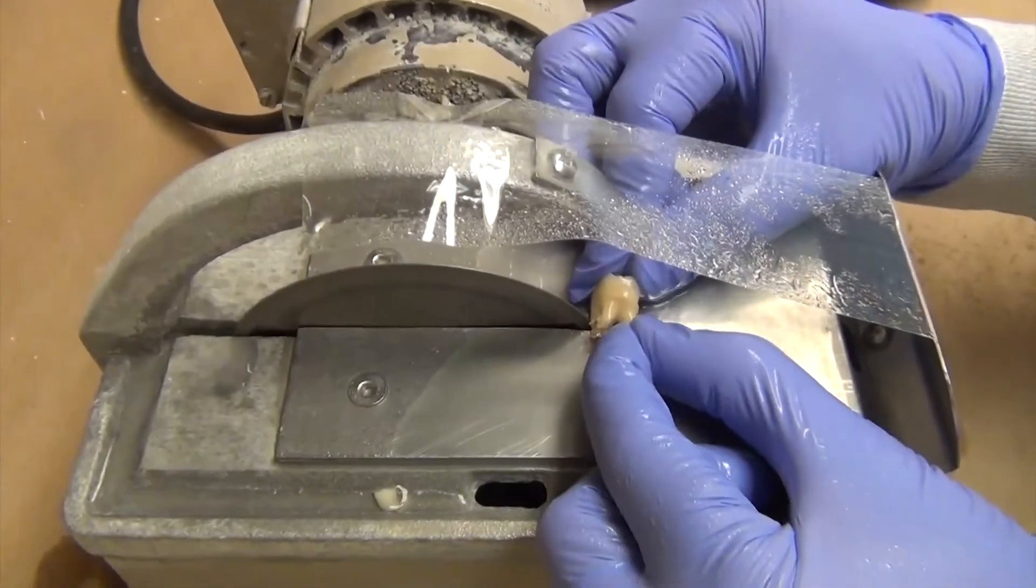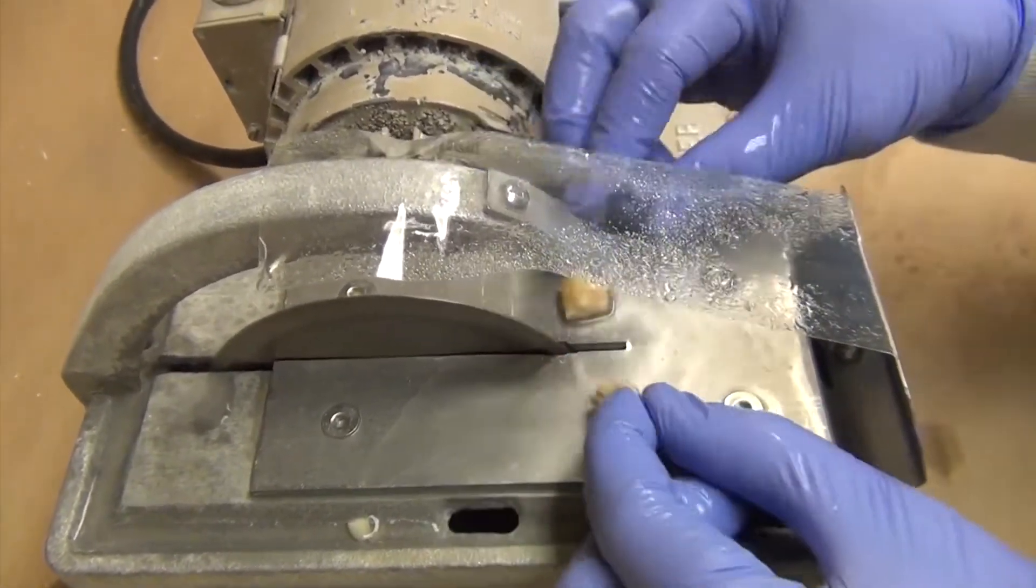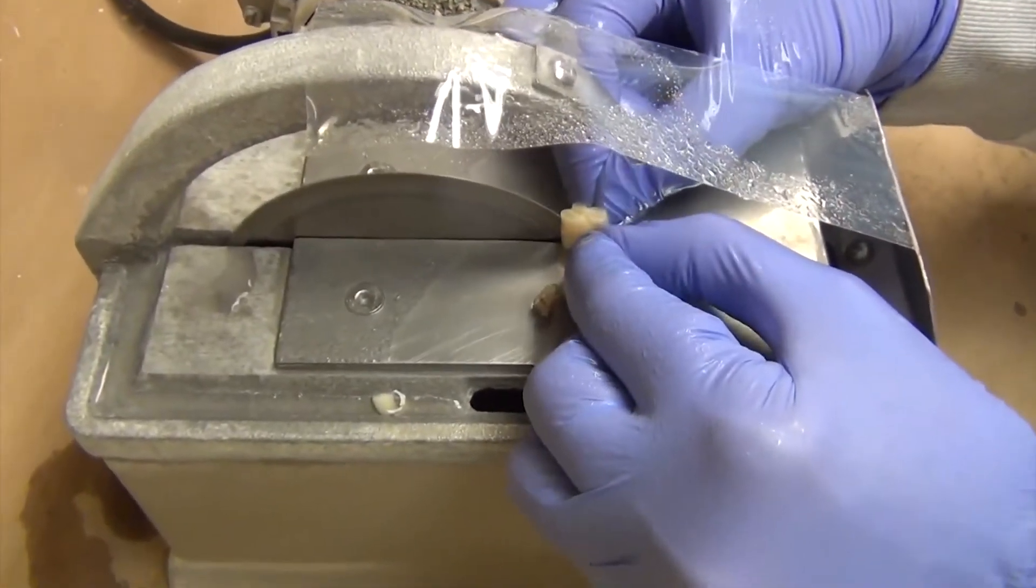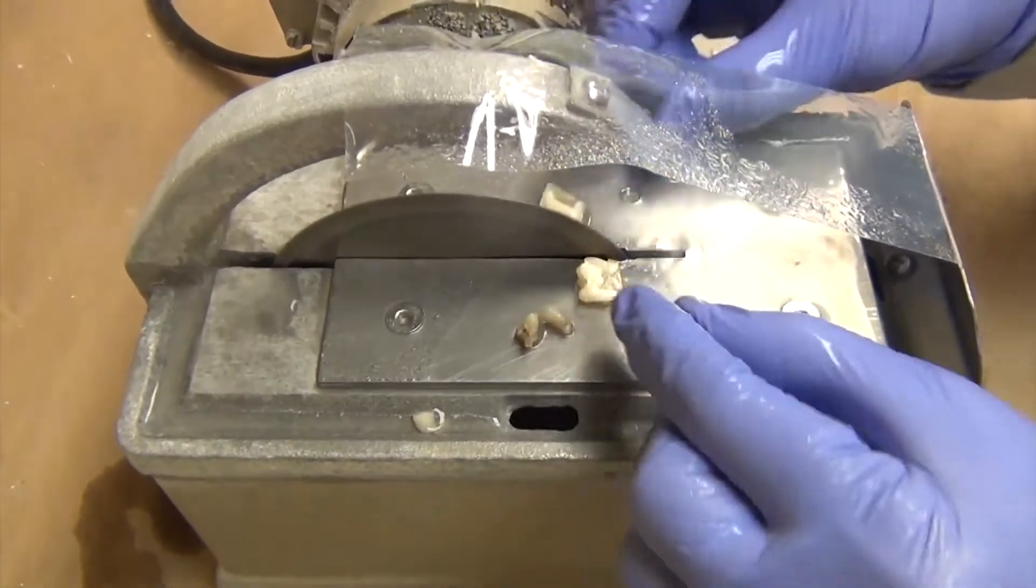The first step in specimen preparation is to section the roots off. This is then followed by rotating the tooth into a vertical position and sectioning through the halves of the tooth. This gives us two usable bonding surfaces for bond testing.